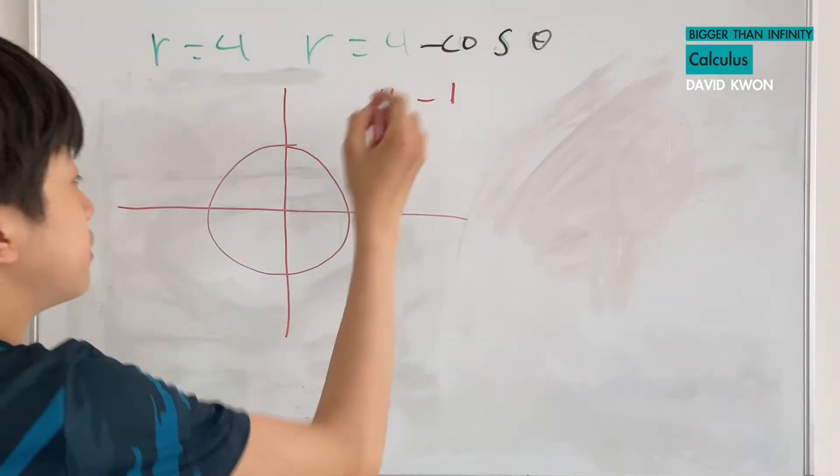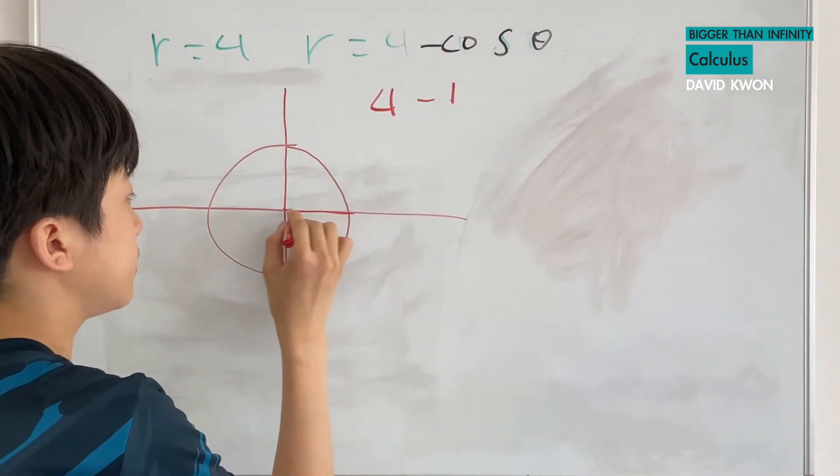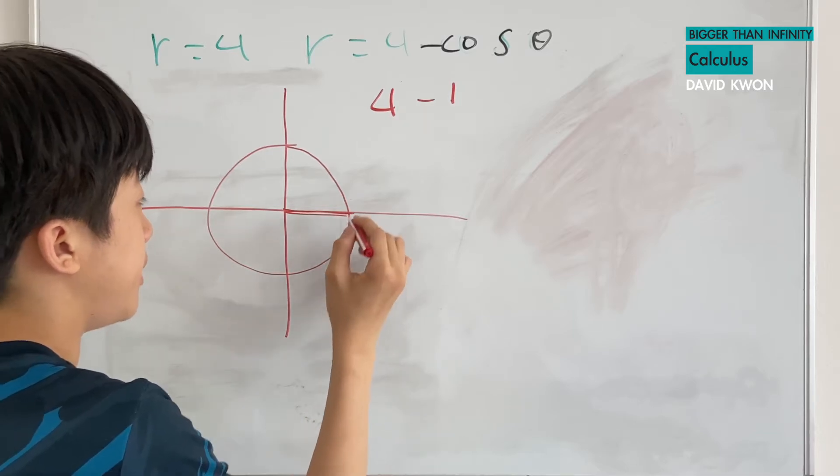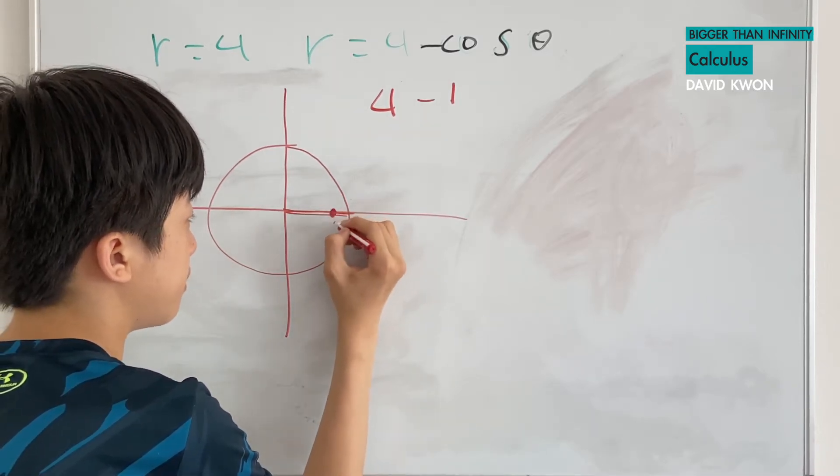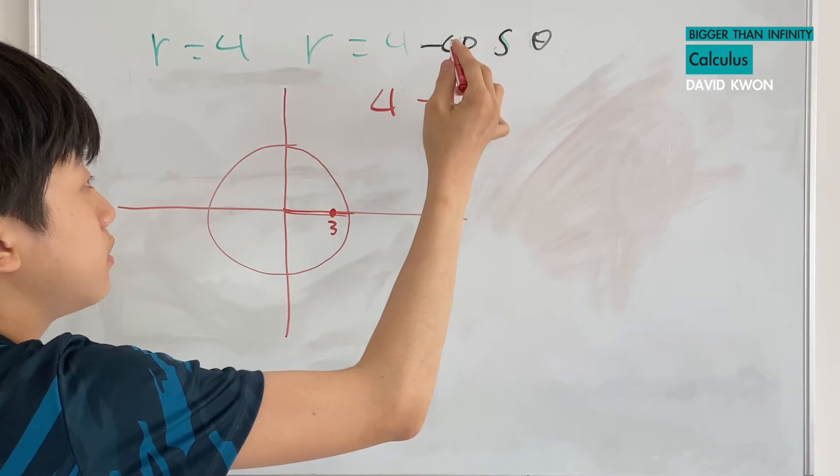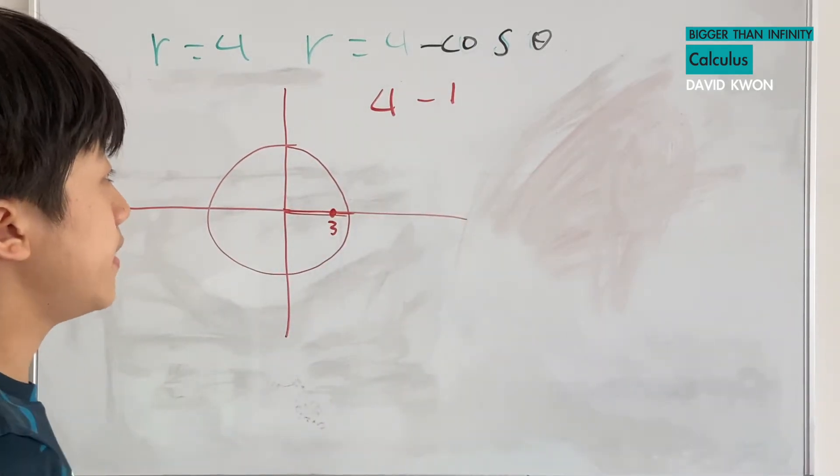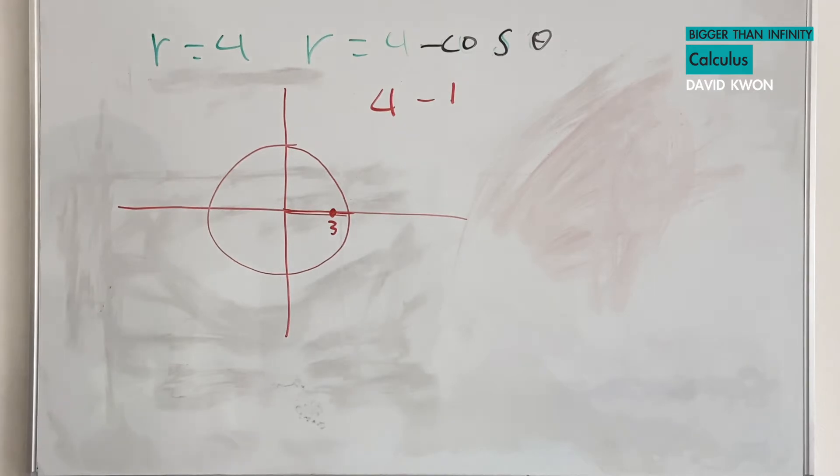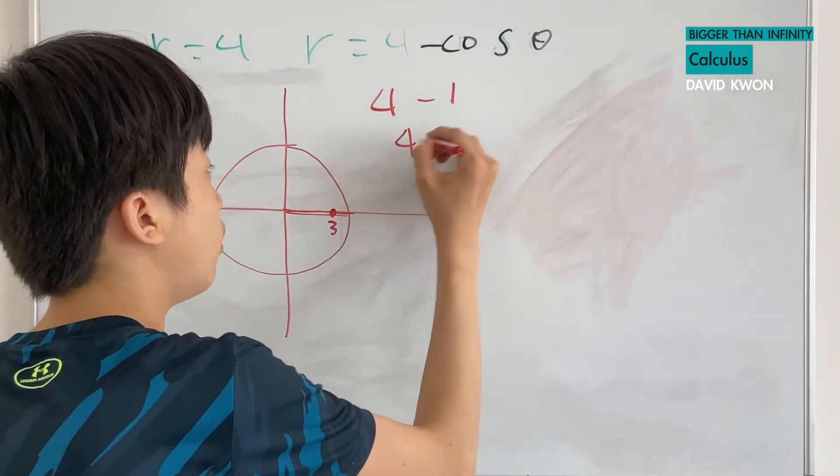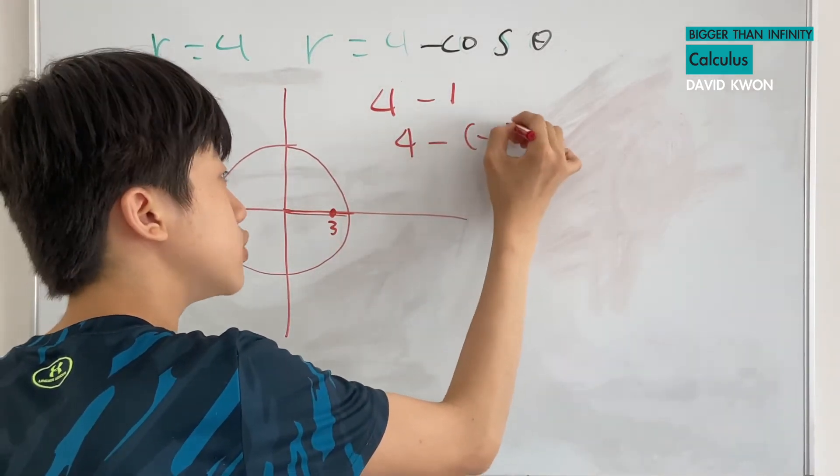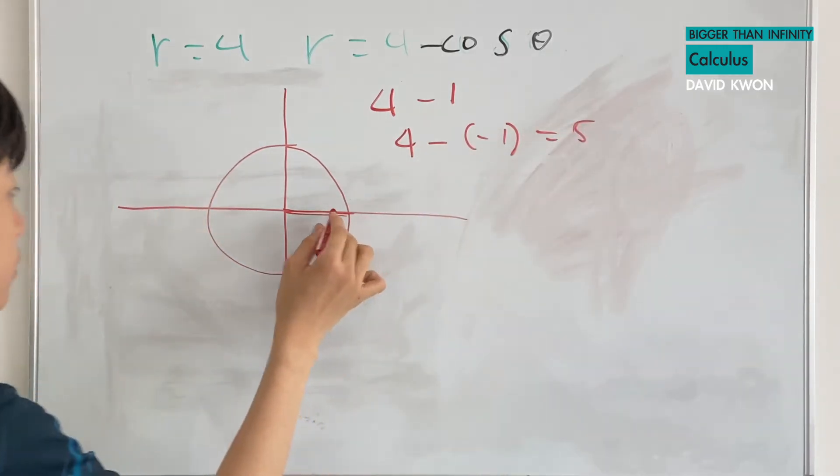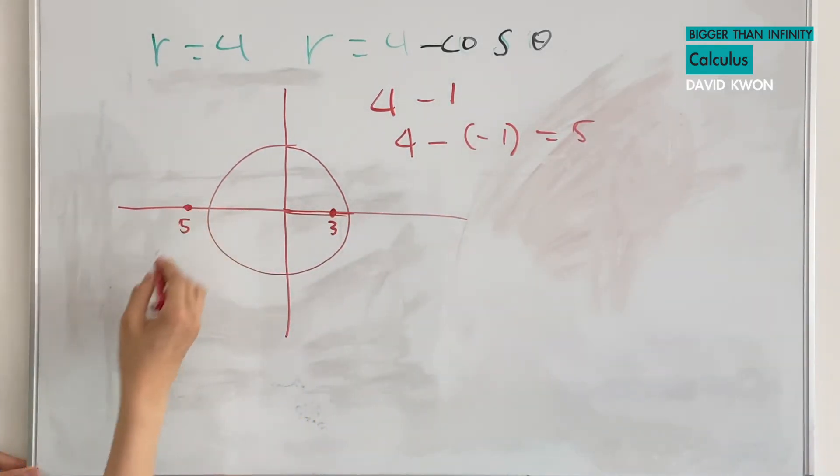And that is at when theta is equal to 0. So when theta is equal to 0, which is this, we have a 3. So this is a 3. And cosine theta can have the smallest number, and that is negative 1 when the theta is pi. So we will get 4 minus negative 1, which is 5. So at theta equals pi, we will have a 5 here.